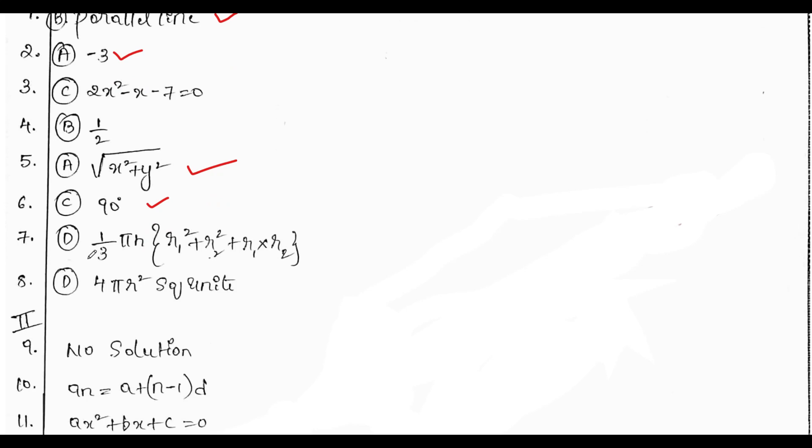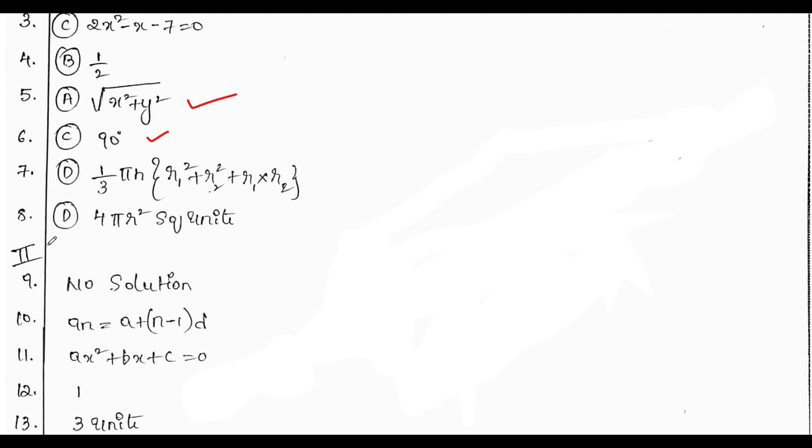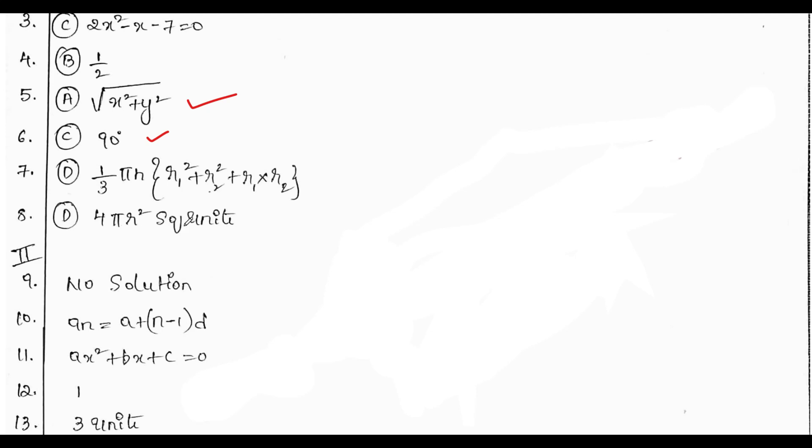Then for seventh question, the correct answer is option D, 1 by 3 pi h, r1 square plus r2 square plus r1 into r2. For eighth question, the correct answer is 4 pi r square square units.